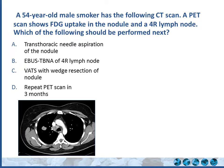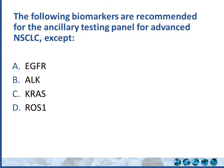Let's start with a case and some questions. A 50-year-old male smoker has a CT scan showing FDG uptake in a right upper lobe nodule and the 4R — right peritracheal — lymph node on PET. Which should be performed: transthoracic needle aspiration of the nodule, EBUS-TBNA of 4R, VATS with wedge resection, or repeat PET in three months? Also: which of the following biomarkers — EGFR, ALK, KRAS, or ROS1 — would you NOT obtain for advanced non-small cell lung cancer?